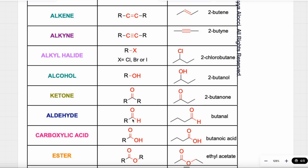I can also have a C double bond O attached to a hydrogen on one side and a carbon on the other. That is called an aldehyde. In this molecule, the C double bond O is attached to a carbon on the left and a hydrogen on the right. The name for this molecule is butanal because it's an aldehyde.